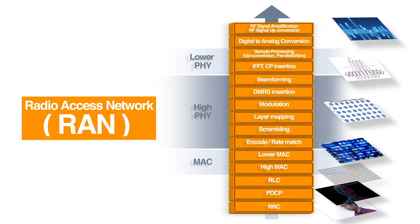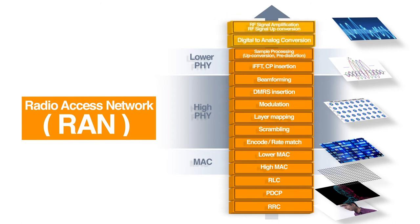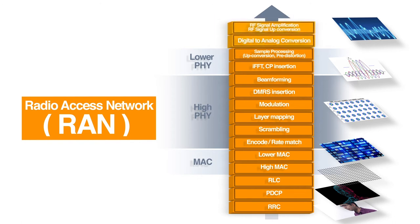Finally, the data arrives at what we call the physical layer in the form of transport blocks, where the packet is rate matched, encoded, and modulated. After this, the reference signal is inserted and beamforming coefficients are applied. So far, the data is all in the frequency domain. Now we convert the data to the time domain by doing inverse FFTs. At last, the data is converted into analog signals, processed by radio frequency circuits, and transmitted at cellular frequency from the cellular tower.